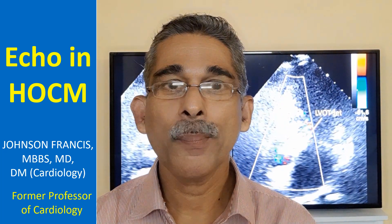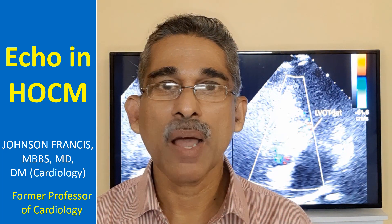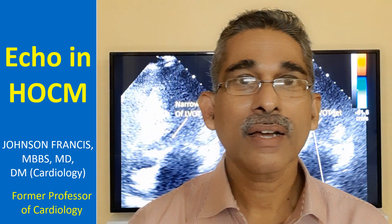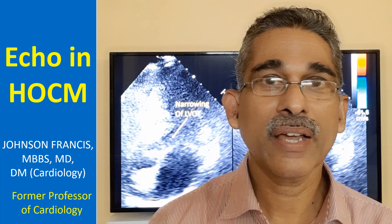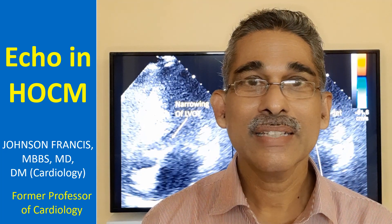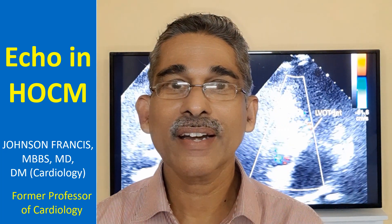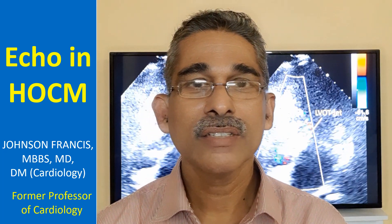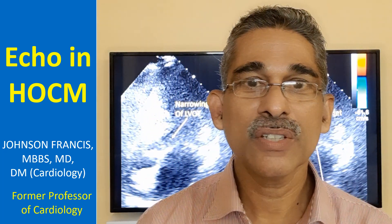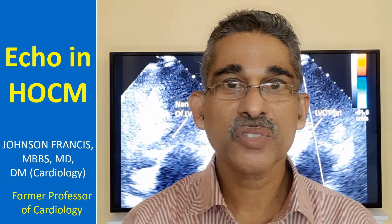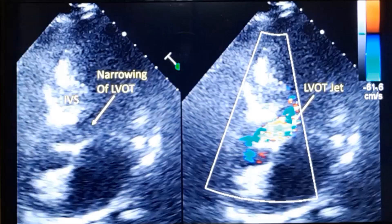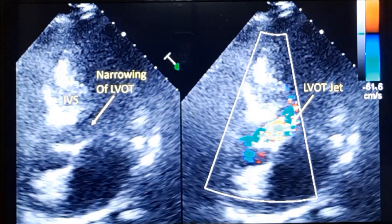Now we'll discuss some echocardiographic features of hypertrophic obstructive cardiomyopathy. The most important feature is asymmetric septal hypertrophy, which produces a narrowing of the left ventricular outflow tract, responsible for the obstructive features of hypertrophic obstructive cardiomyopathy. This is an apical 5-chamber view in hypertrophic obstructive cardiomyopathy.